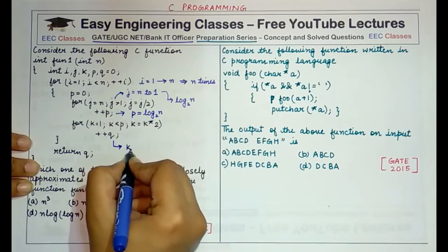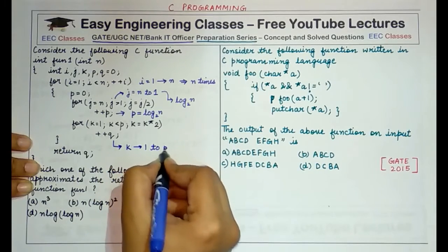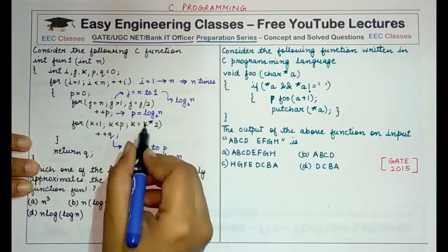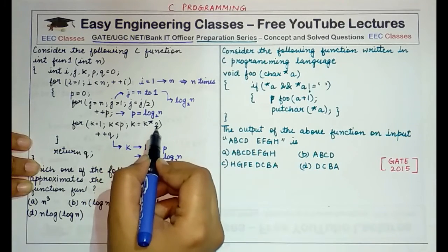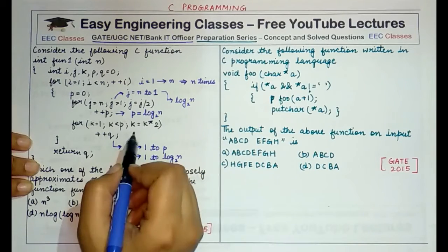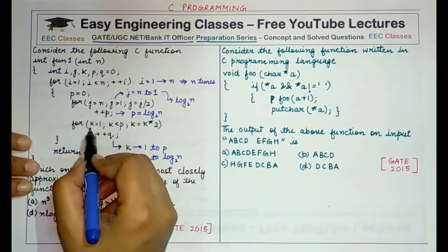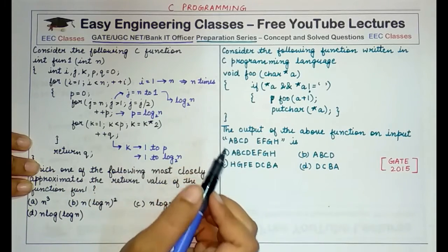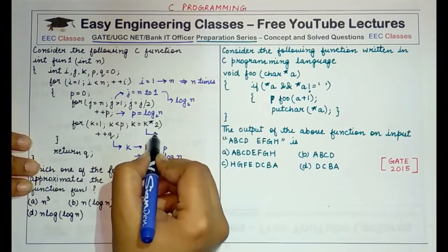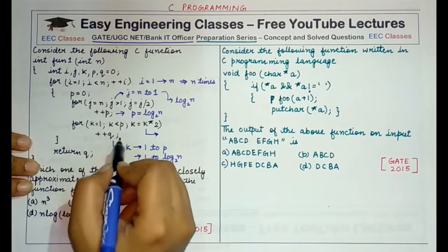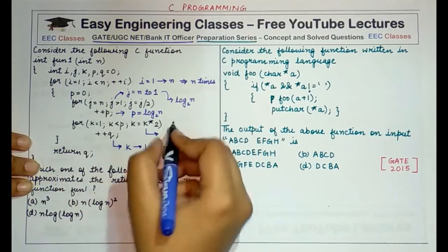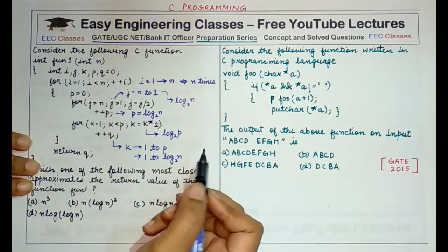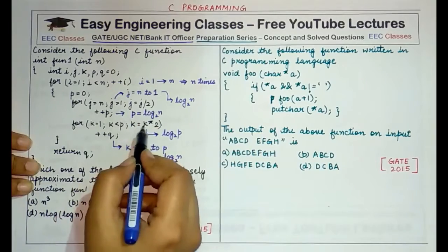Now in the third for loop, variable k ranges from 1 to p, and p is log n. So k ranges from 1 to log n. Also k is incremented by multiplying it by 2 at each iteration, as long as k is less than p. So the value of q obtained after the end of this for loop would be log of p — because the range of k is from 1 to p, and k doubles each time.